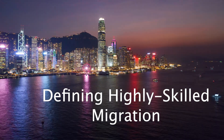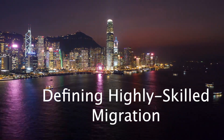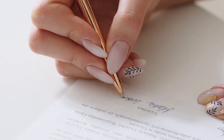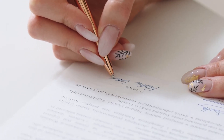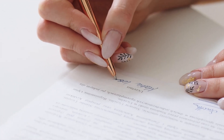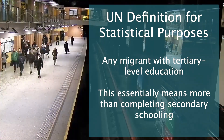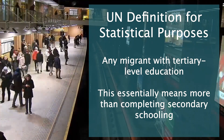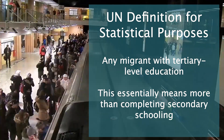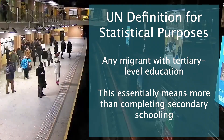Let's jump in and understand a little bit more about highly skilled migration. First of all, how do we even define highly skilled migration? There's no universally accepted definition. Some countries do issue specific residence or work permits for highly skilled immigrants using a combination of different measurements. At the UN level, highly skilled migrants are generally defined for statistical purposes as any migrants that have a tertiary level of education — basically more than secondary school.